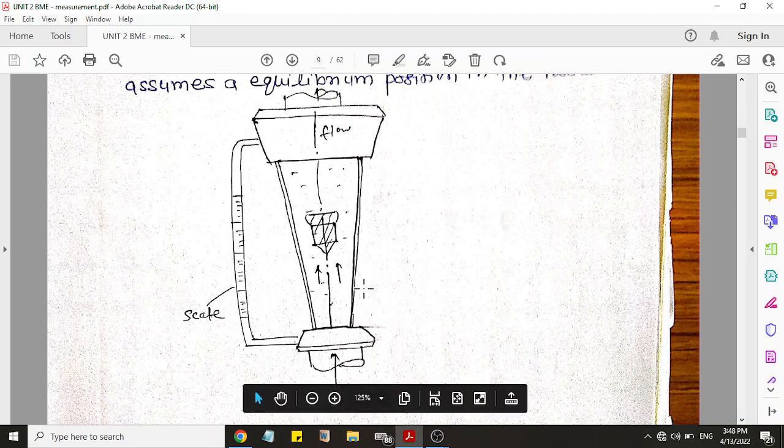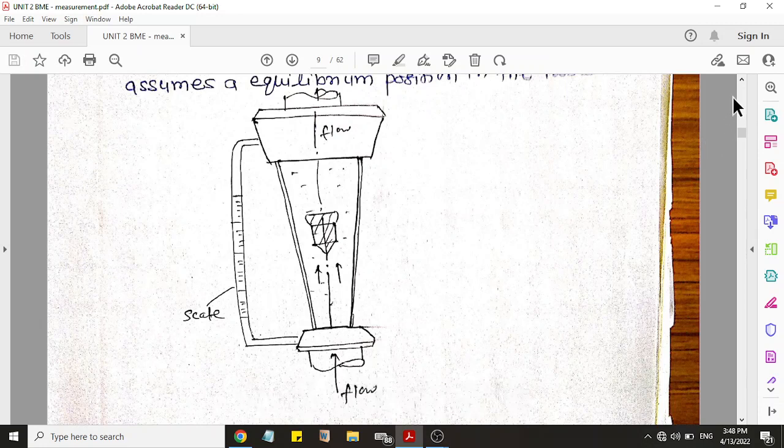And one important point is the flow should be in the upward direction. And as the flow will increase, this float will move higher, and as per the height of this float you can judge the flow inside the pipe.